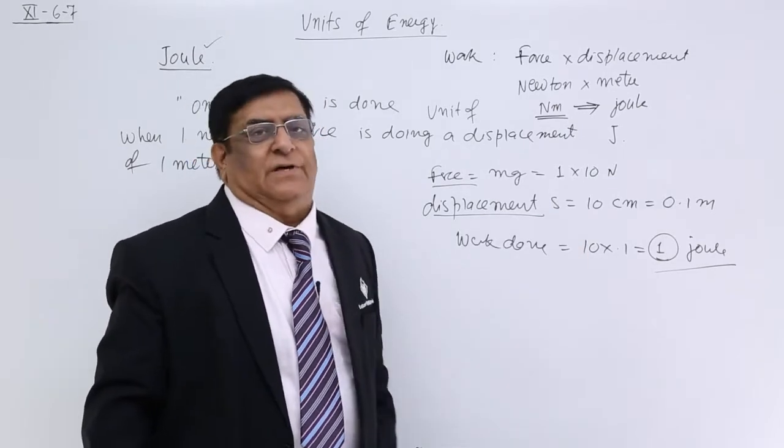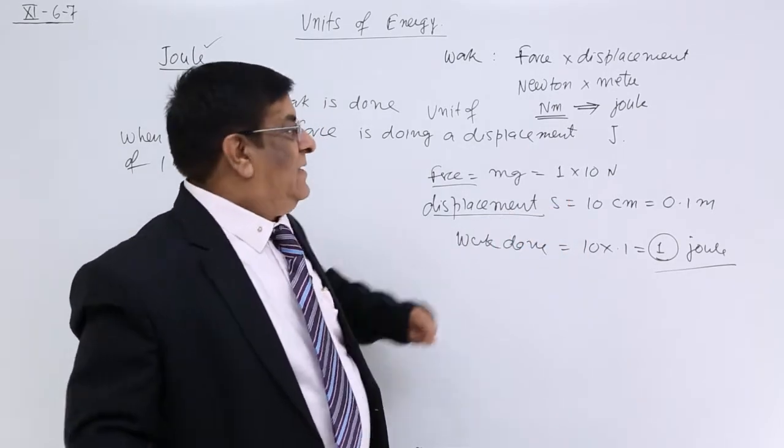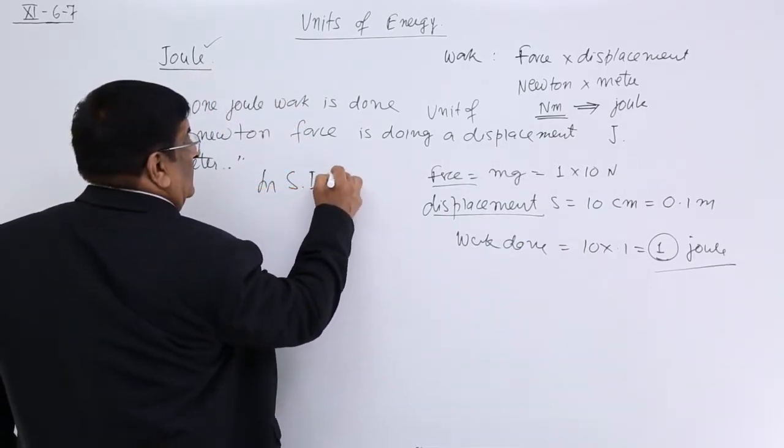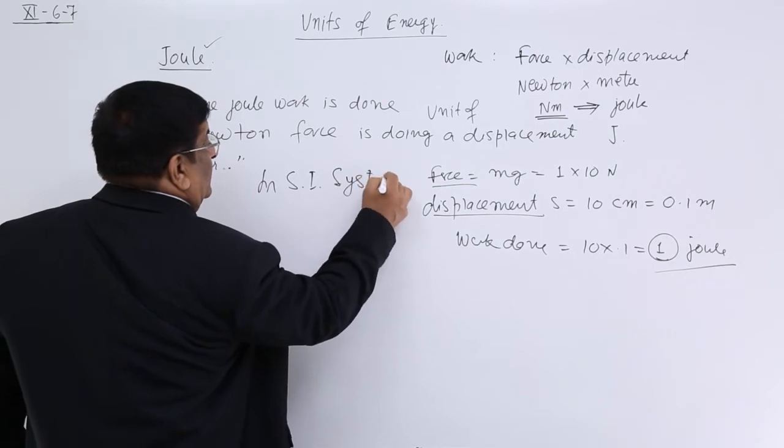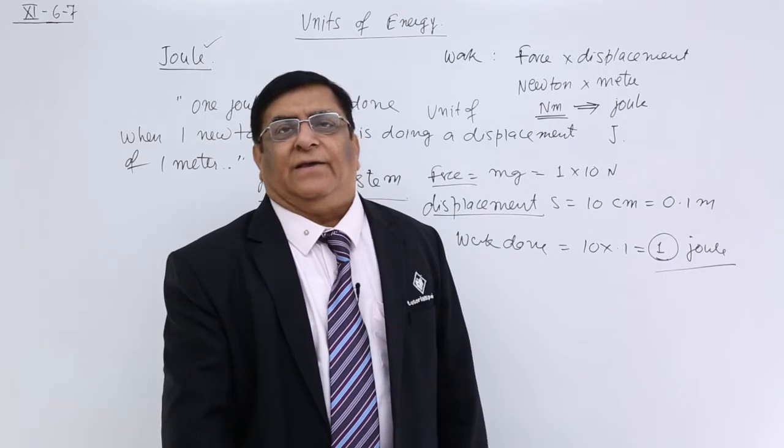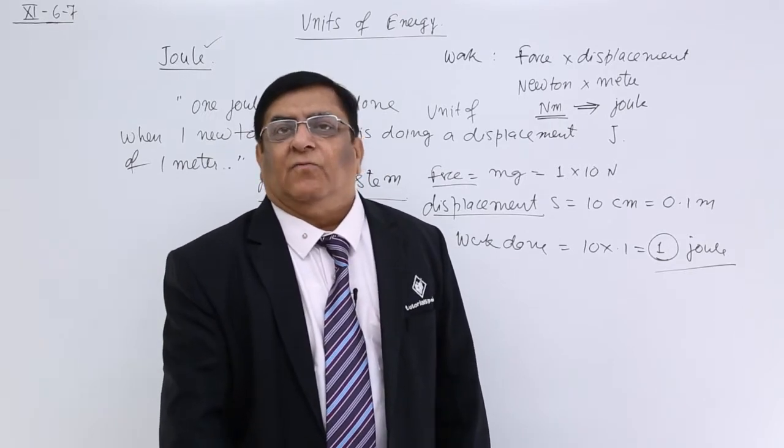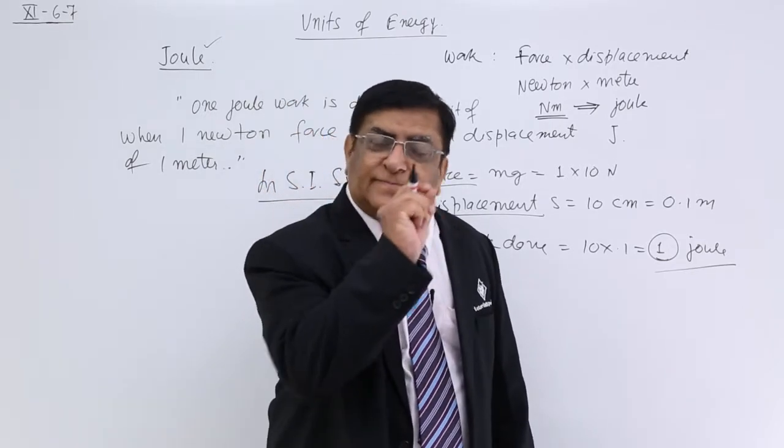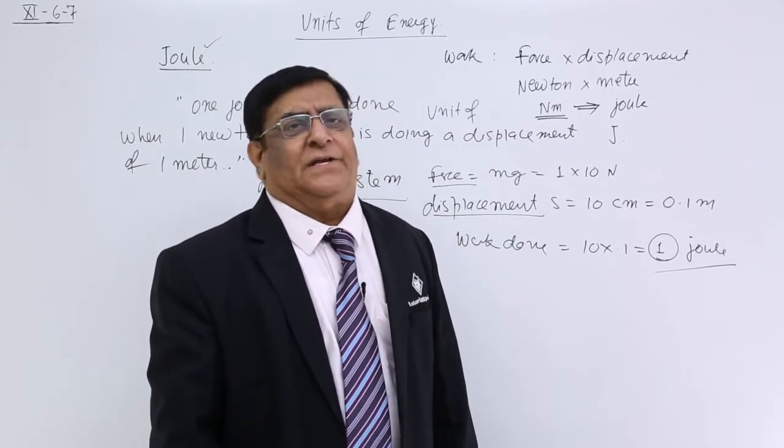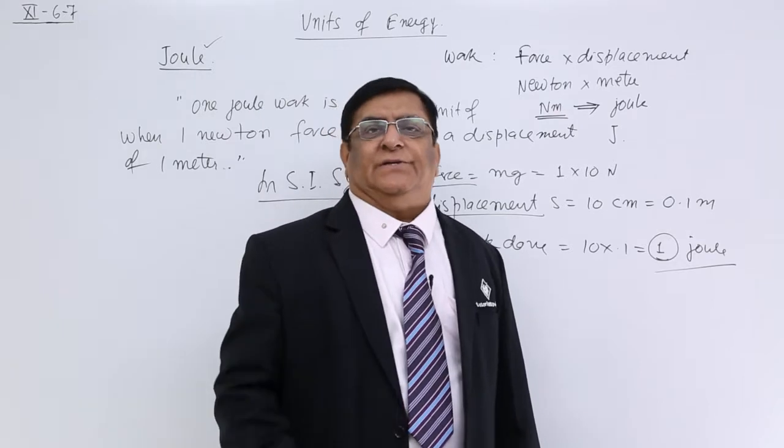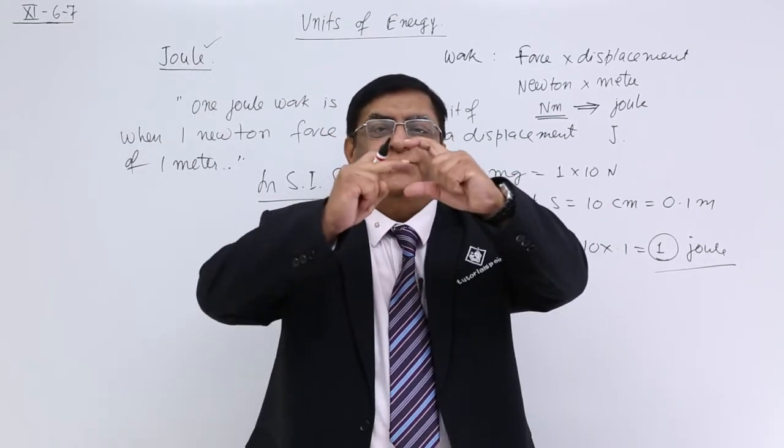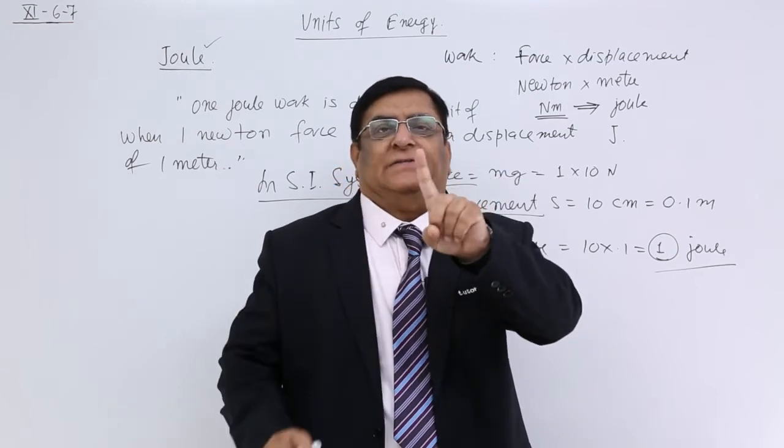This 1 Joule is our SI system unit. For very small things, like in nuclear physics, when we are moving electron, the energy calculations are very small. There we are using another unit. That is when one electron moves under a potential difference of 1 volt.